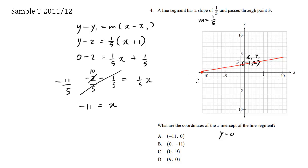The y value is zero. We have this coordinate, it's going to be negative 11 comma zero. And this here is the x-intercept. So the choice here would be A.